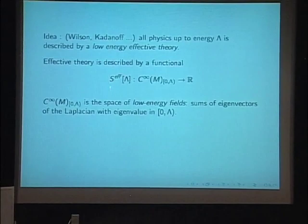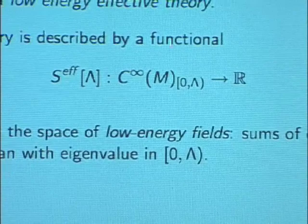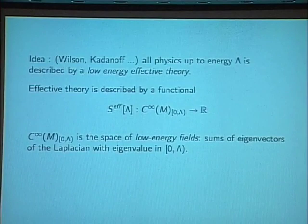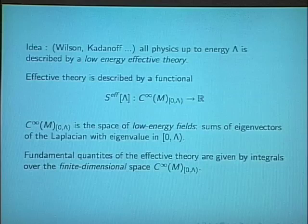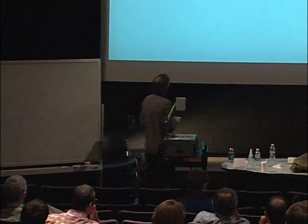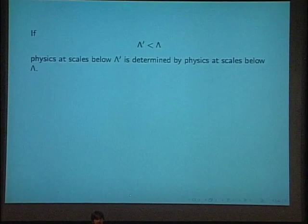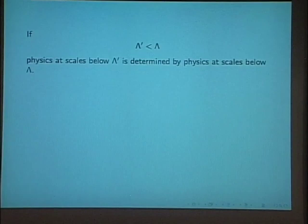This low energy effective field theory is described by a low energy effective action, which is a functional on the space of low energy fields. A field phi is of low energy if it is a sum of eigenvectors of the Laplacian whose eigenvalues lie in a bounded interval. The key observation is that this is a finite dimensional vector space. In this effective field theory we can compute our correlation functions and everything we want — there are absolutely no problems. It's analogous to using a lattice, but instead we are throwing away the high energy fields.